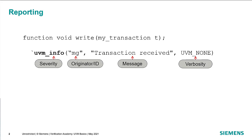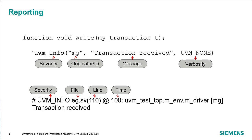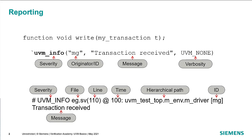When you call UVM_INFO from within your code, the simulation will produce a message where the first piece of information is the severity. Then it will show you the file and the line number — information that the use of the macro provides — the time at which it was called, the hierarchical path to the component that actually called it, and then the ID and also the message itself. This gives us a standard mechanism for getting useful information out of the system in a regular way.